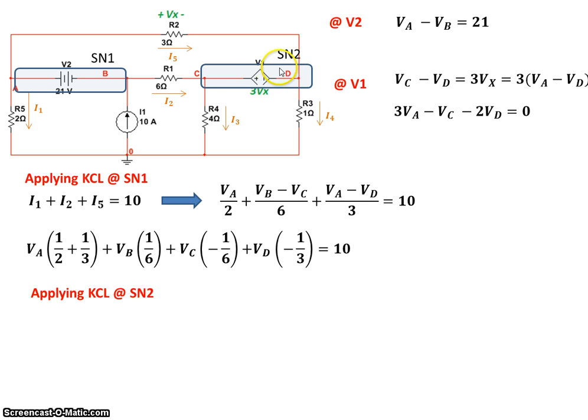Now we apply KCL at supernode 2. Applying KCL at supernode 2, we see the current going in is I2 and I5. Current coming out is I3 and I4. So I2 plus I5 equals I3 plus I4.